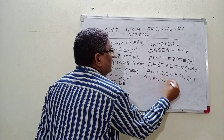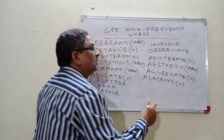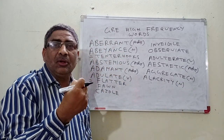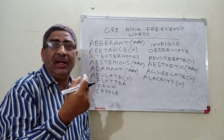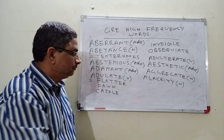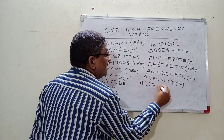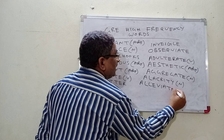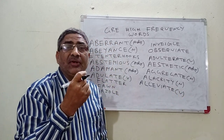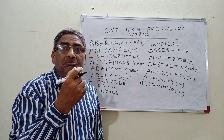Alacrity — it is a noun. What is alacrity? Cheerful promptness — a man with a lot of cheer and joy. That is called alacrity. Next, Alleviate — what is the meaning of alleviate? To reduce the intensity of a problem. That is called alleviate.